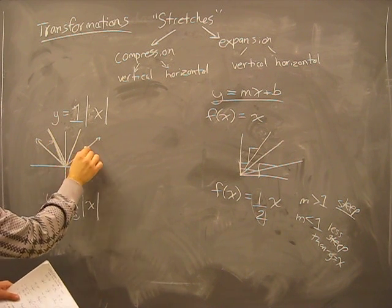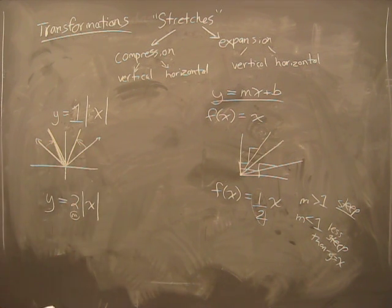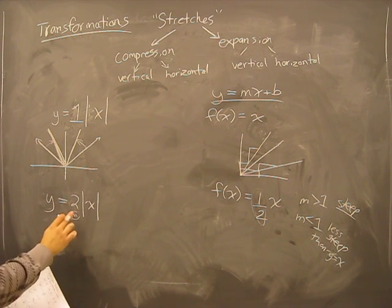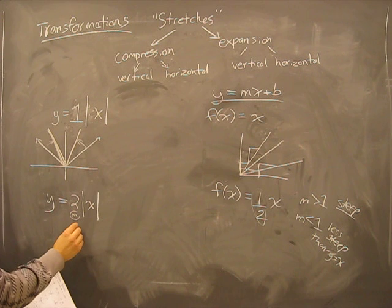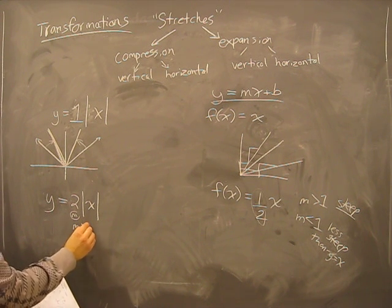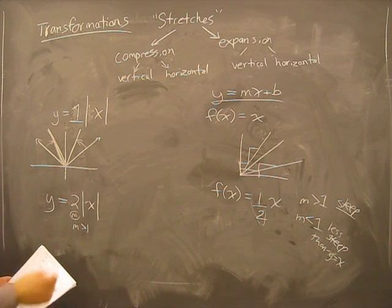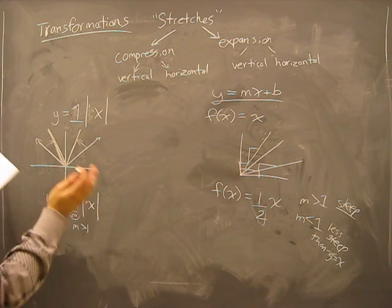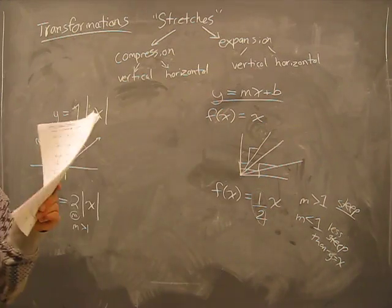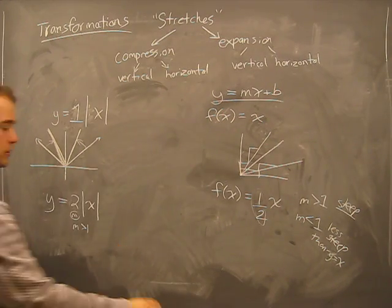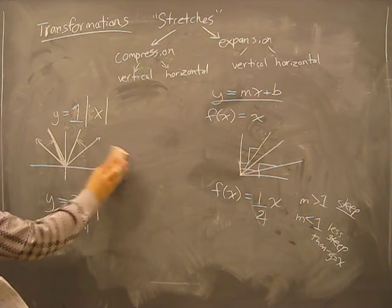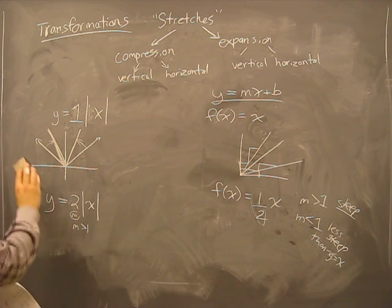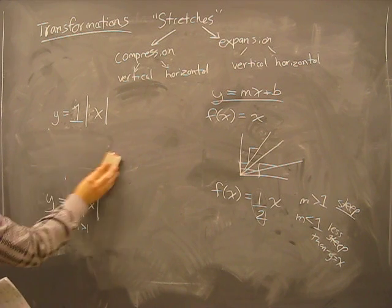So, how I want you to think about this, is we've changed this slope and it's m is greater than 1. And what has happened is that we've compressed it. Just think of that, compressed. I'll get into more detail about that, about how we know it's a vertical compression later. But this is what's happening when we mess with the function.